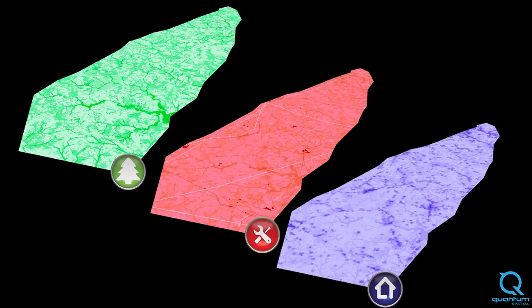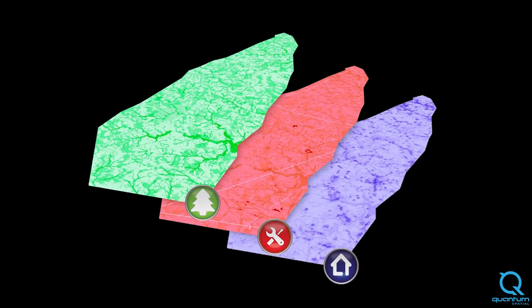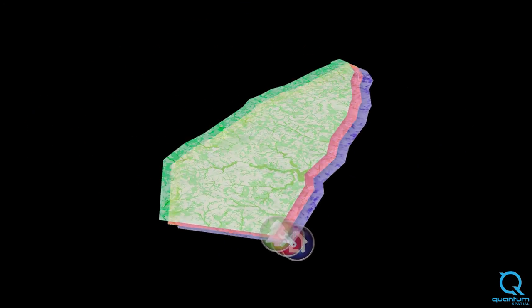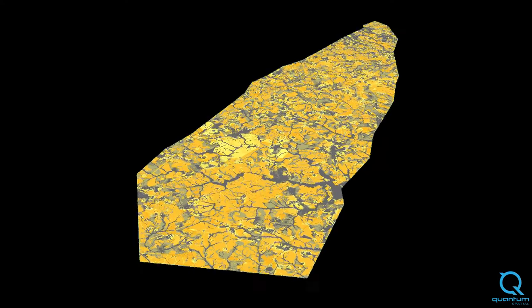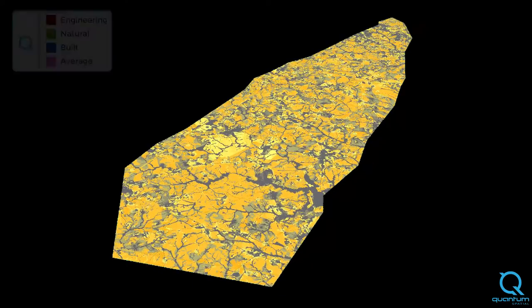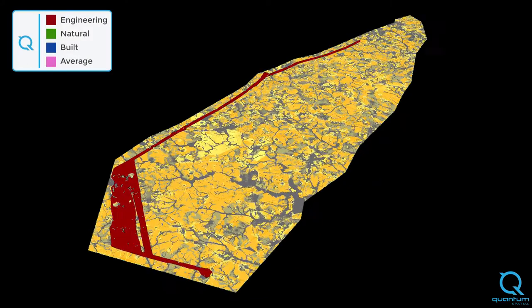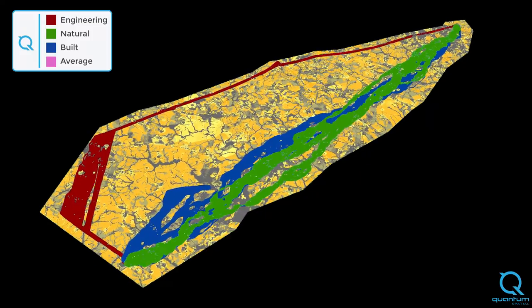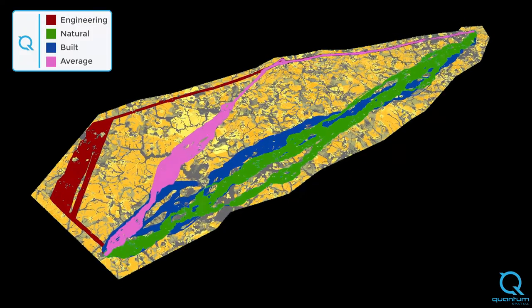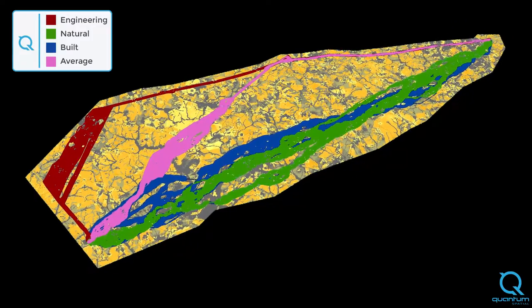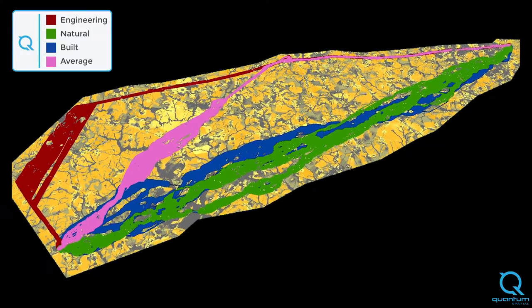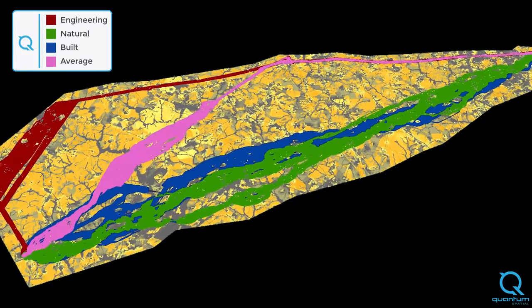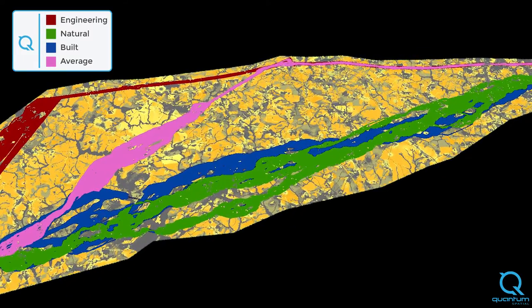Using Corridor Analyst, Quantum Spatial combines analysis from each perspective into a single suitability map. Quantum Spatial analyzes the suitability maps using a routing algorithm to create generalized paths or alternate corridors. These corridors represent the most suitable areas for a transmission line from each perspective.